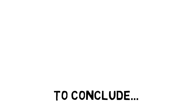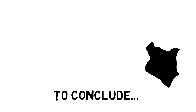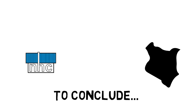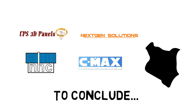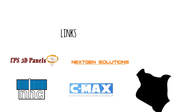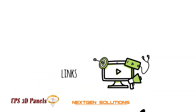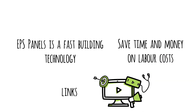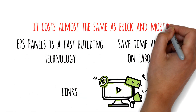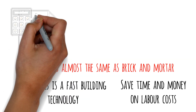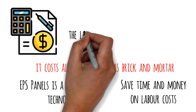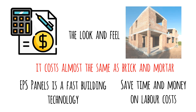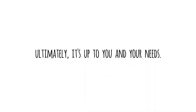EPS panels have been around for quite a while in Kenya. Some of the key players in the EPS industry include the National Housing Corporation (NHC), CMAX Kenya, EPS 3D Panels, and NextGen Solutions — with links to these companies included in the description below. It is a faster building technology that can help you save time and money on labor costs, but as a construction material it costs almost the same as brick and mortar. At the end of the day, what matters is your budget and how you want your property to look and feel. If you like the aesthetics of a stone-walled home, EPS technology won't give you that result — so ultimately, it's up to you and your needs.